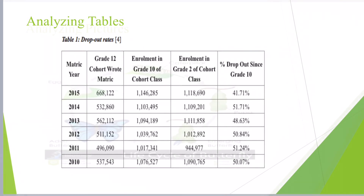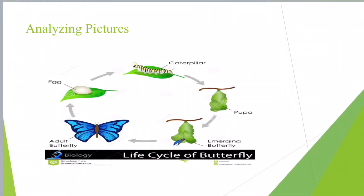Finally, we have analyzing pictures. Here we have the life cycle of a butterfly. The picture shows the life cycle of a butterfly, starting with the egg, then it moves to become a caterpillar, then it changes into the pupa. From the pupa, it goes to be an emerging butterfly, and then it turns into an adult butterfly that lays eggs again, and the cycle of the butterfly goes around.